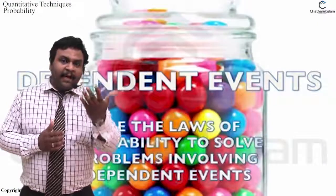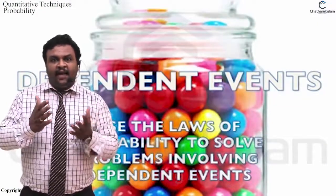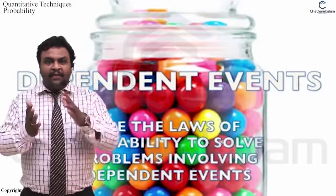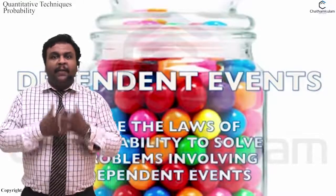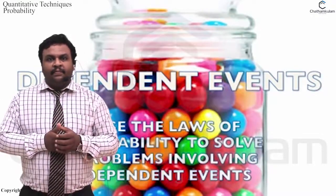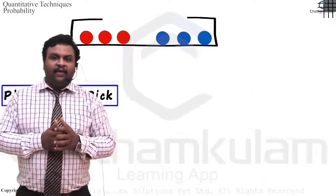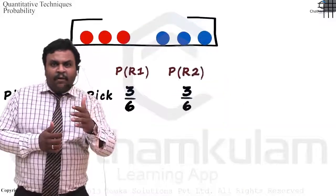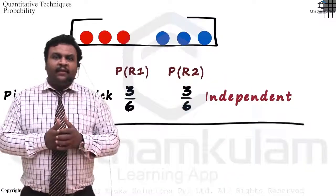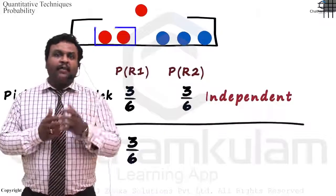Next we can discuss what is meant by dependent events. Dependent events means if one event depends upon subsequent events, they are called dependent events. What is meant by independent events? If one event does not depend upon the subsequent event, then such types of events are called independent events.